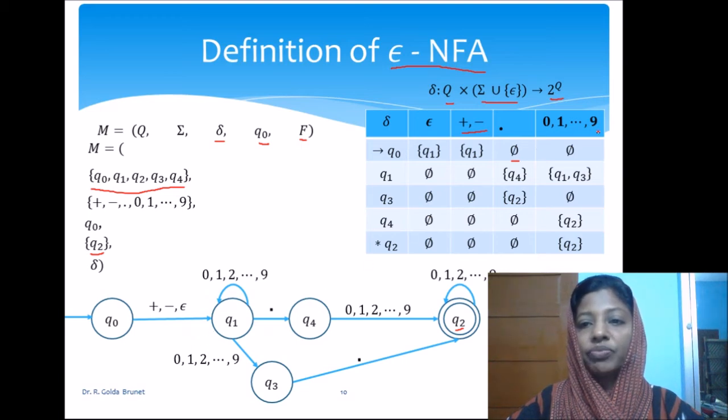We have these symbols in the same column. So, here also for Q0, we have not defined the transition. So, it is null string.